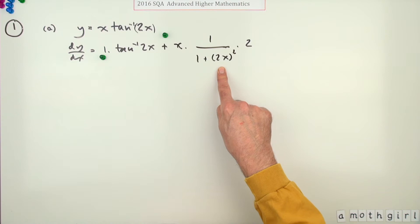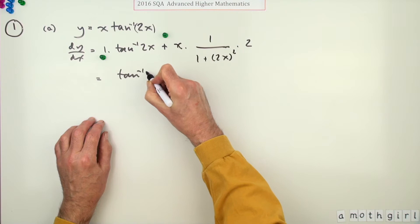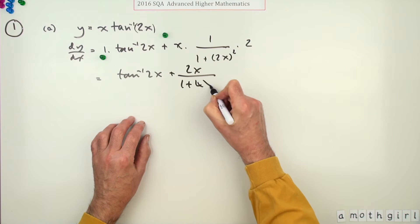And the final mark was for differentiating the other term and tidying it up. So we'll tidy up first, so that means we've just got inverse tan of 2x plus 2x over, and that will be 1 plus 4x squared. There's the third mark.